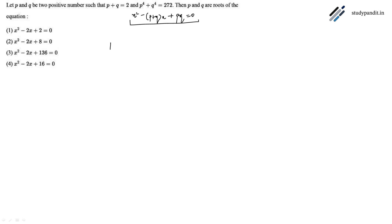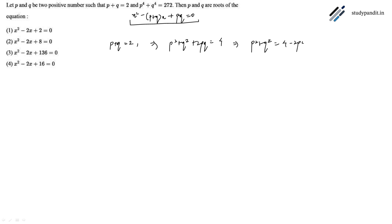It is given that p plus q equals 2. Squaring both sides, we get p squared plus q squared plus 2pq equals 4. From here, p squared plus q squared equals 4 minus 2pq.